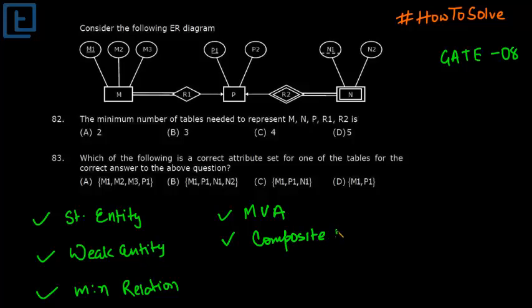Let's start with our problem. Here we have M and P are strong entity, so we will have to take separate table for them. Now this N is weak entity, so we will take separate table for it. For these three entities we need three tables.